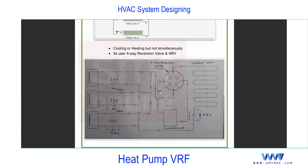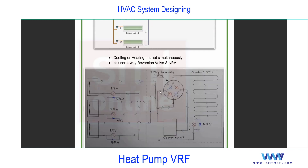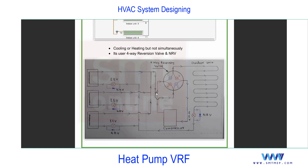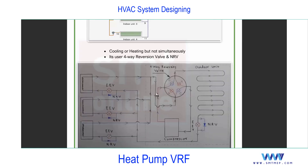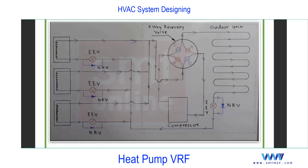Let me explain this using the line diagram, first in cooling mode, then we'll discuss heating. The same things we discussed before are applicable here - one outdoor unit, multiple indoor units, and electronic expansion valves. Now on screen you can see the cooling mode represented in blue color.